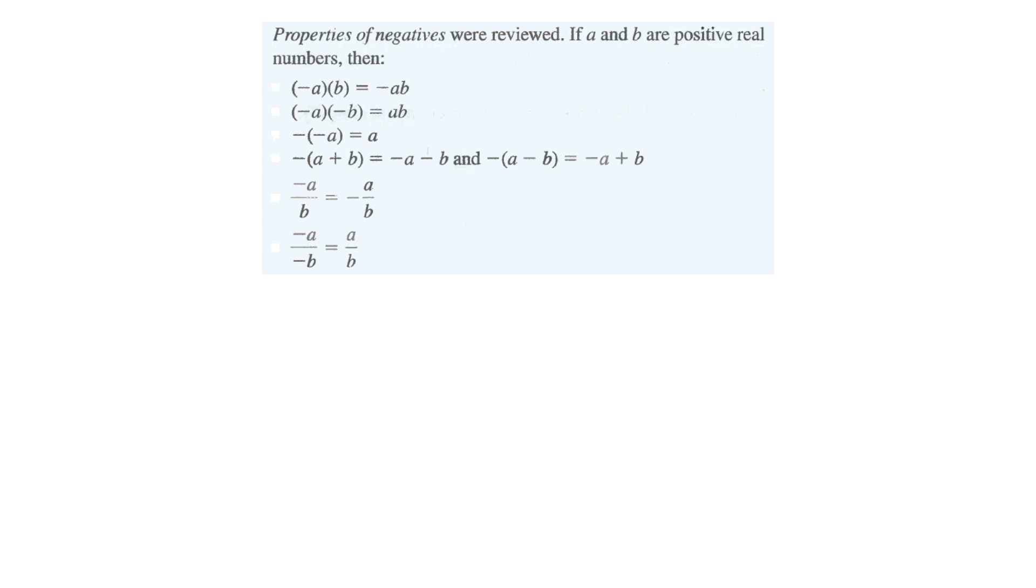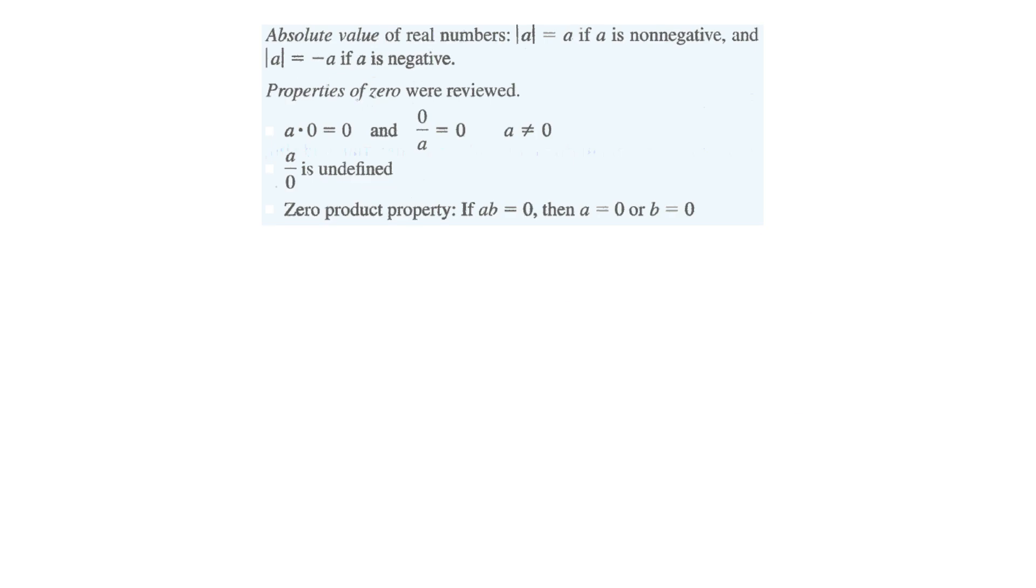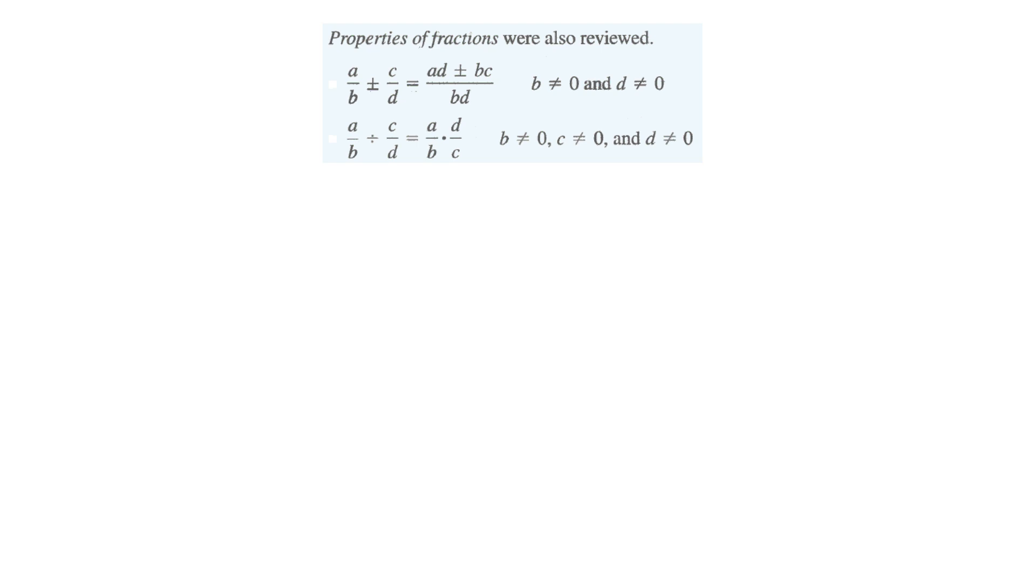We have our negative properties here. I'm not going to talk about them too much other than this one right here with the fractions. So negative a over b, so something like negative 5 over 3, can be written as negative 5 over 3. You can pull the negative out front. And that's the same as 5 over negative 3. Notice that in each one, there's only one negative. We'll keep that throughout the year. And remember that if you times by 0, you get 0. Any thing times 0 is 0. And anything divided by 0 is undefined. Cannot divide by 0 and get a real number.